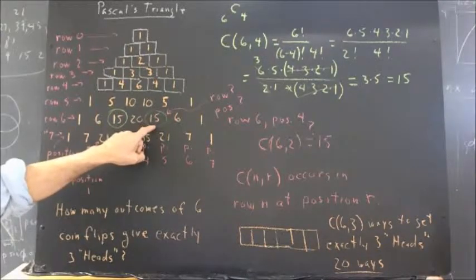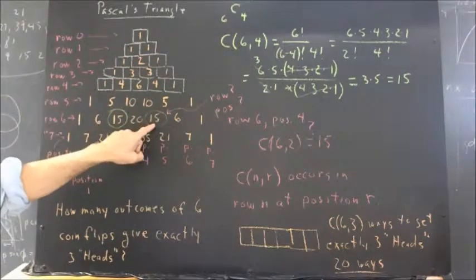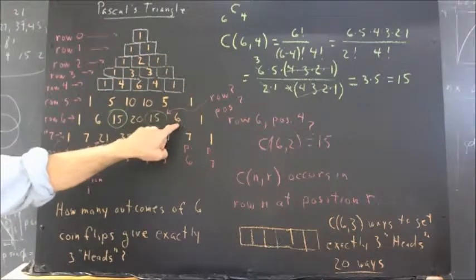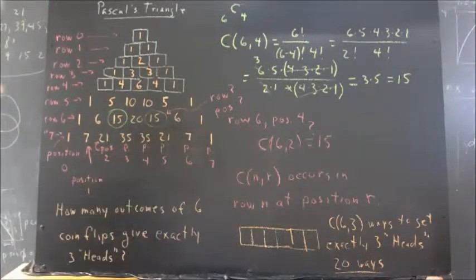...four heads, which happens 15 ways, and we can calculate that again either by the formula or looking at Pascal's triangle; six ways to get five heads, exactly five heads; and one way to get exactly six heads.